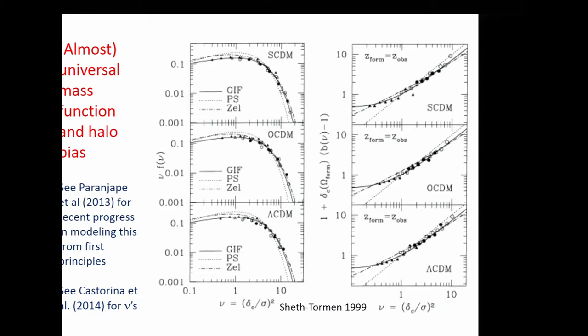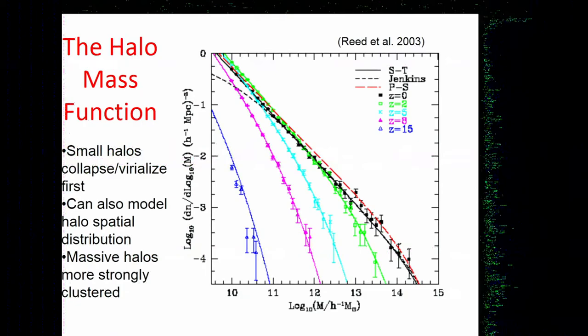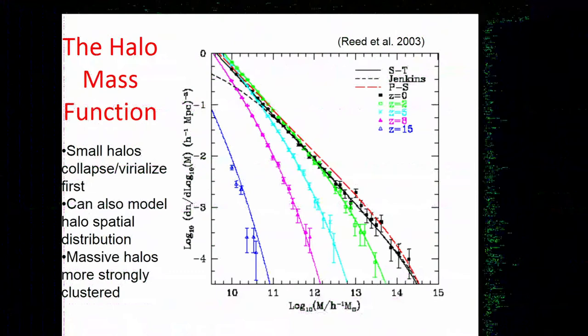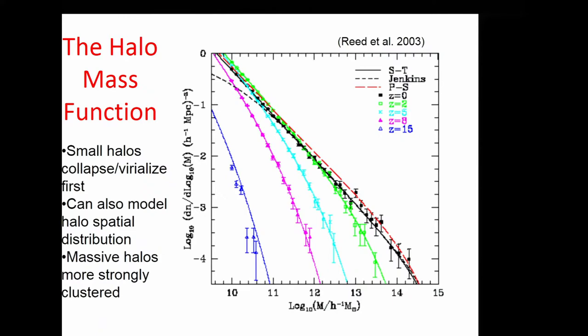Translating those universal curves back into physical redshift and mass for a ΛCDM power spectrum: at very high redshift there are few massive halos, and as time goes on there are more and more. The symbols are measurements from simulations and the curves are the same theory just plotted for different times — and it works well.